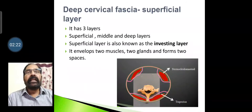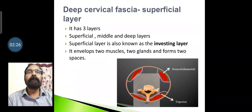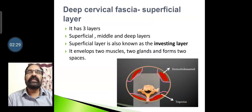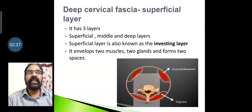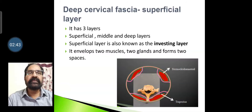The deep cervical fascia has three layers: superficial, middle, and deep. The superficial layer is also known as the investing layer. It envelops two muscles and two glands, and forms two spaces.